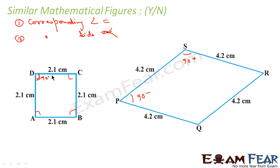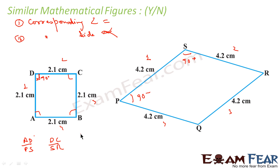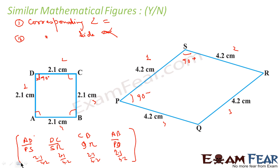But here if you see, the sides are proportional. This is 2.1 by 4.2, which is 1 by 2. We assume side 1, side 2, side 3, and side 4, and compare AD by PS, DC by SR, CB by QR, and AB by the corresponding side. This becomes 2.1 by 4.2, this is also 2.1 by 4.2, this is also 2.1 by 4.2, and this is also 2.1 by 4.2. So you can see the sides are proportional, but still it is not similar.